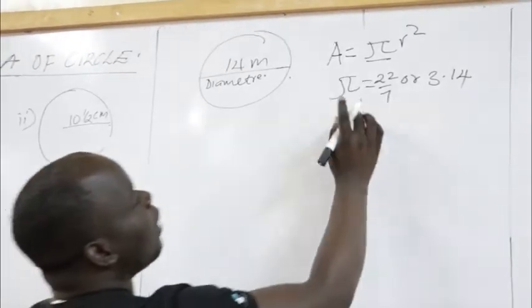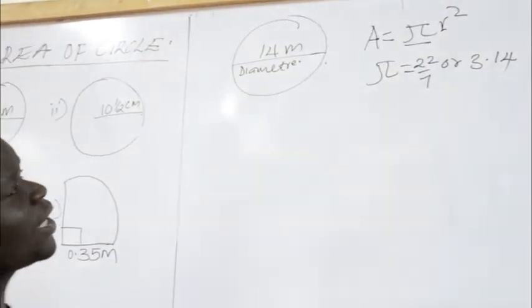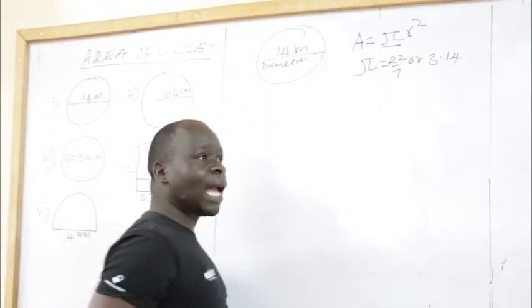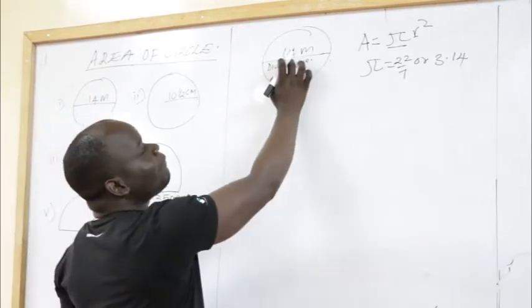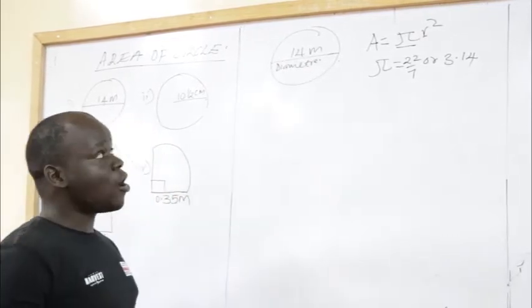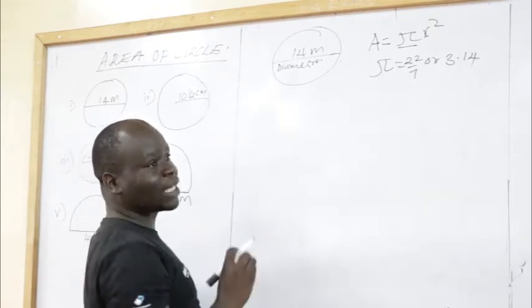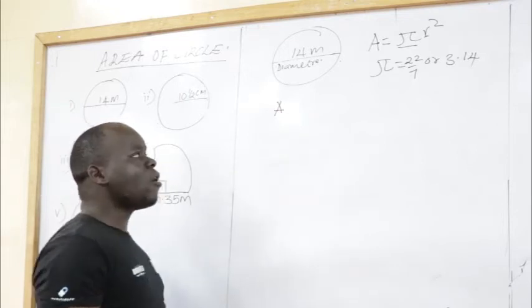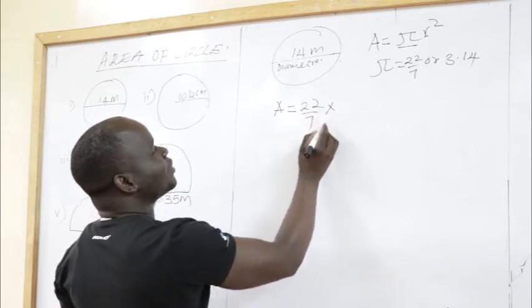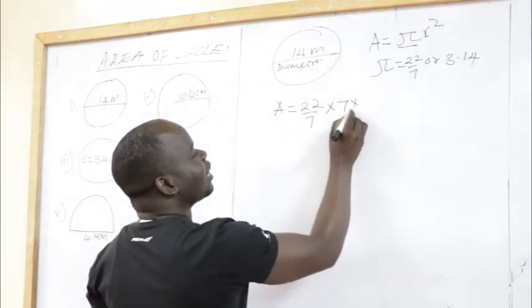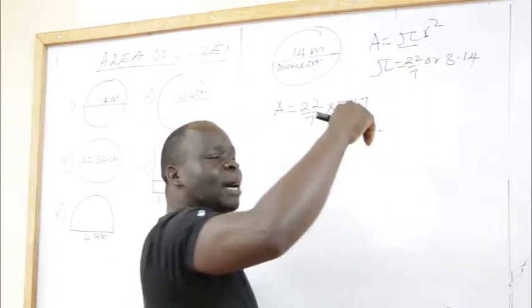If the radius is not divisible by 7, use 3.14 to avoid confusion. In the area of a circle formula we use radius, not diameter. So we must convert: radius is half the diameter. Half of 14 is 7, so our radius is 7. Remember, we don't use diameter — we use radius. That is the first concept you need to understand.